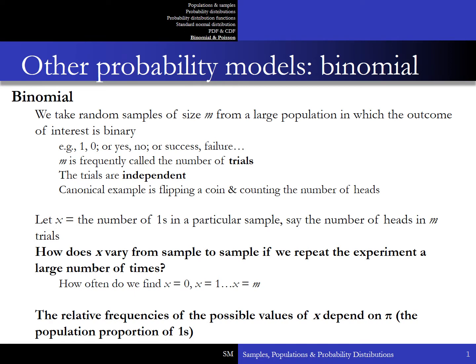How does x vary from sample to sample if we repeat the experiment a large number of times? In other words, how often do we find that x is equal to 0, or x is equal to 1, or x is equal to M? The relative frequencies of the possible values of x depend on a parameter. We use the Greek letter pi to symbolise this parameter, which is the population proportion of ones — successes.